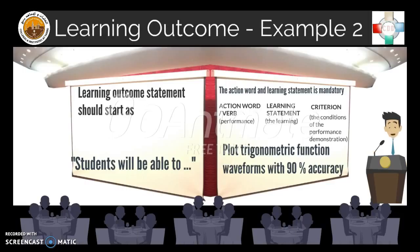The second example of a learning outcome statement is: 'Students will be able to plot trigonometric function waveforms with 90% accuracy.' Here, 'plot' is the action verb, 'trigonometric function waveforms' is the learning statement, and 'with 90% accuracy' is the criterion.